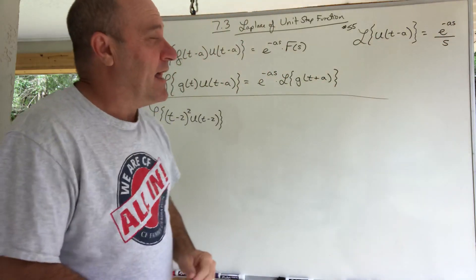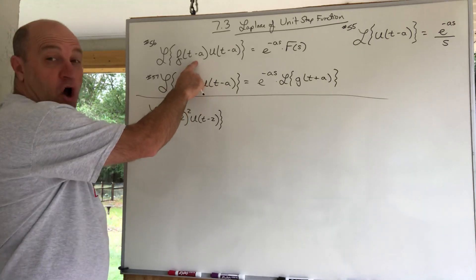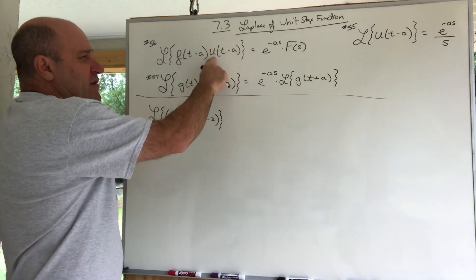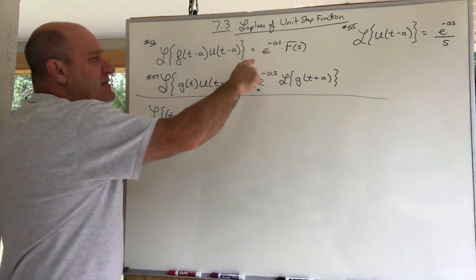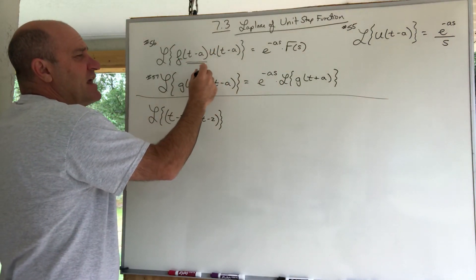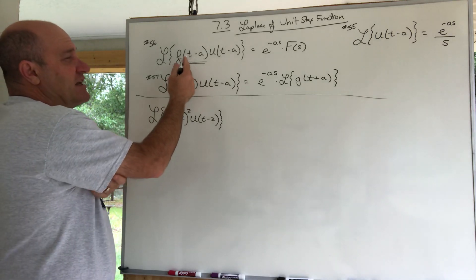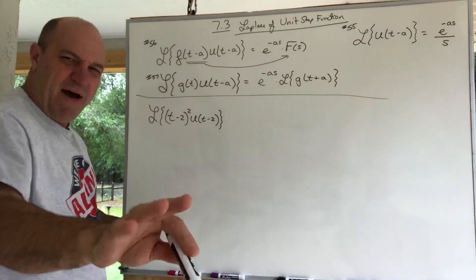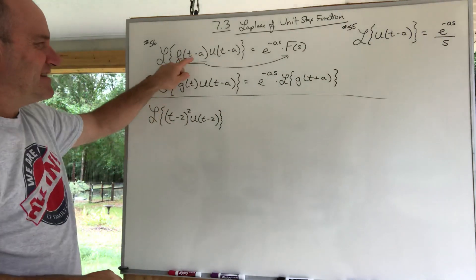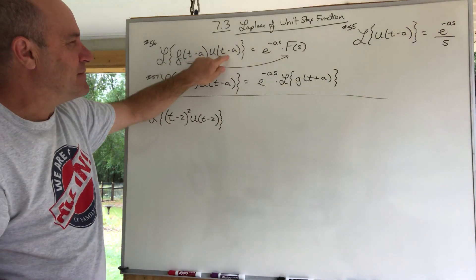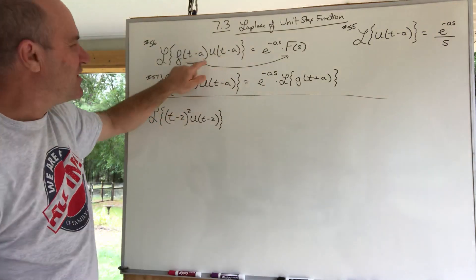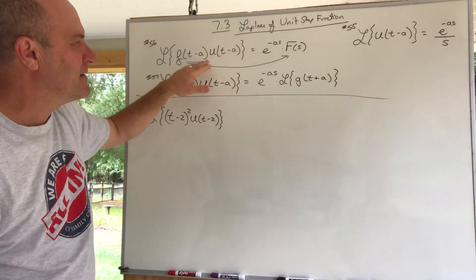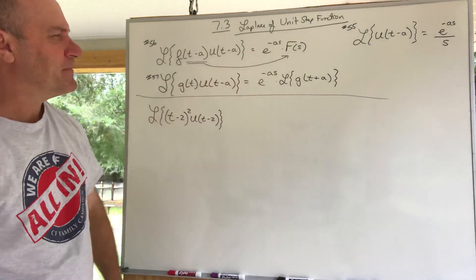For rule 56, when the function's argument matches the argument of the unit step function — that is, f(t-a)·u(t-a) — the unit step function produces the e to the negative as factor, and then you just take the Laplace of f(t) as if it wasn't shifted. The Laplace of f(t) is F(s), so you pretend it's an f of t to get the result.